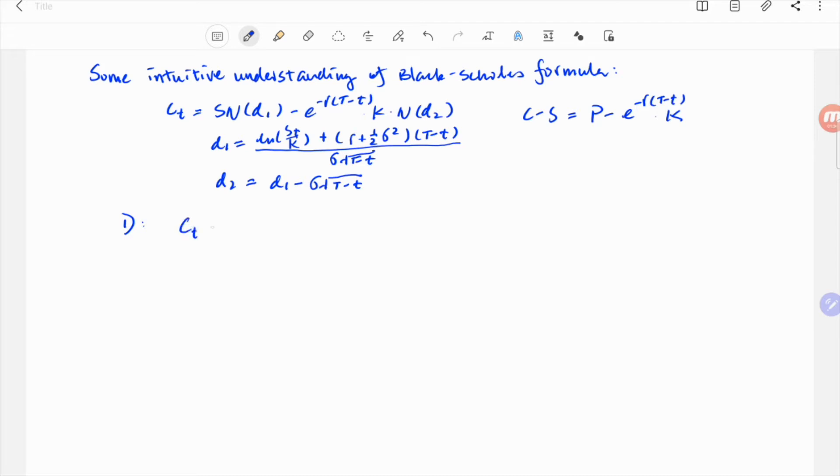The first insight I would like to discuss is to notice the first term is about the asset, while the second term is about cash or cash-like. Imagine instead of the payoff of a standard European call S minus K when price is above the strike K, the payoff is just S, the asset price itself.